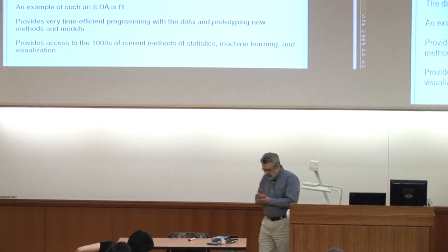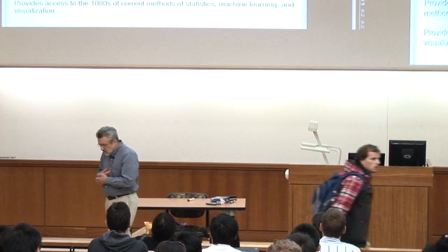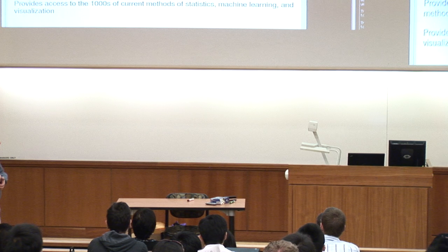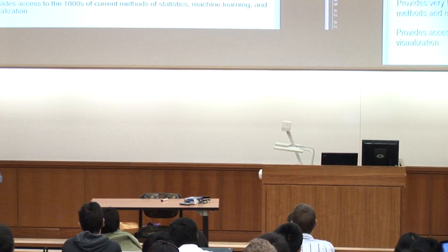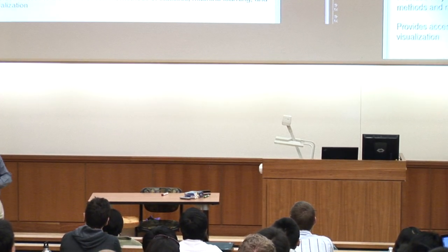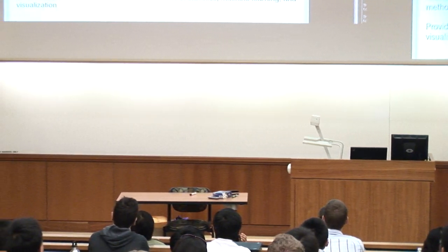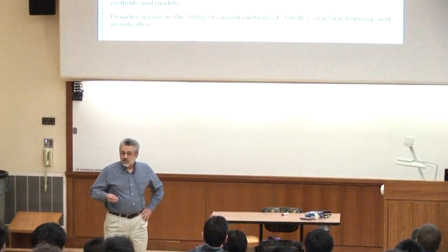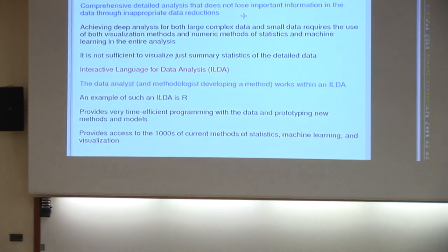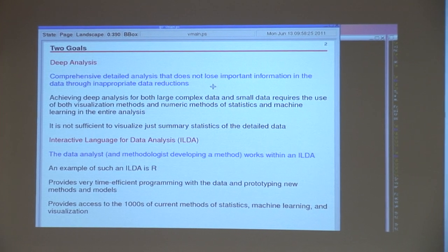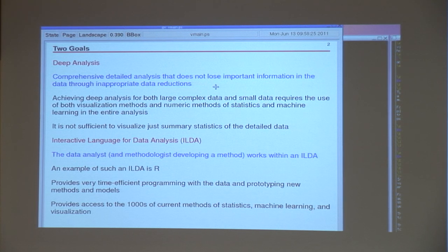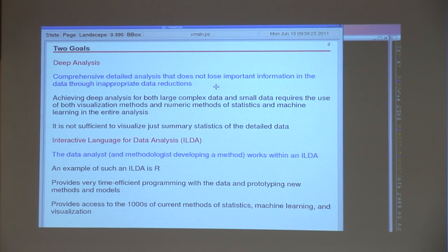There are two goals here, and this is extremely important because it colors the whole solution. The first is that we're aspiring to deep analysis — comprehensive, detailed analysis that doesn't lose important information in the data through inappropriate data reductions. Achieving deep analysis requires both visualization methods and numeric methods of statistics and machine learning throughout the whole analysis. It's simply not sufficient to visualize a summary.